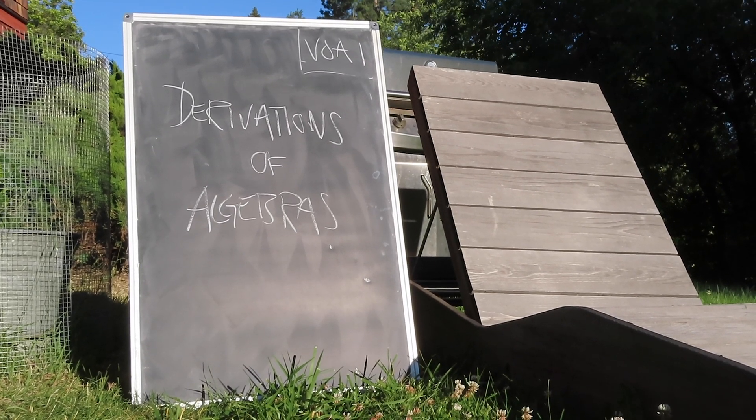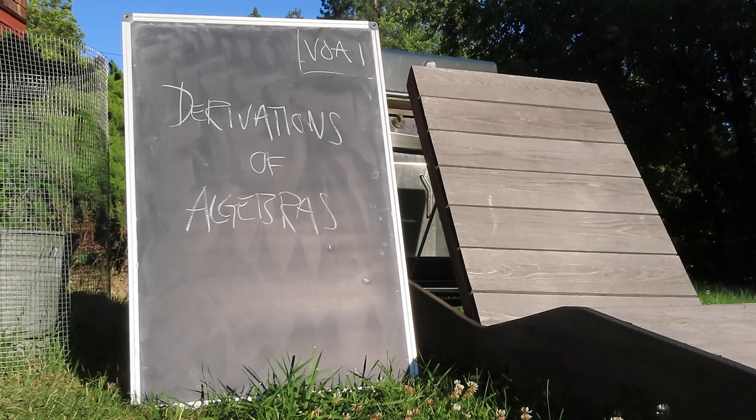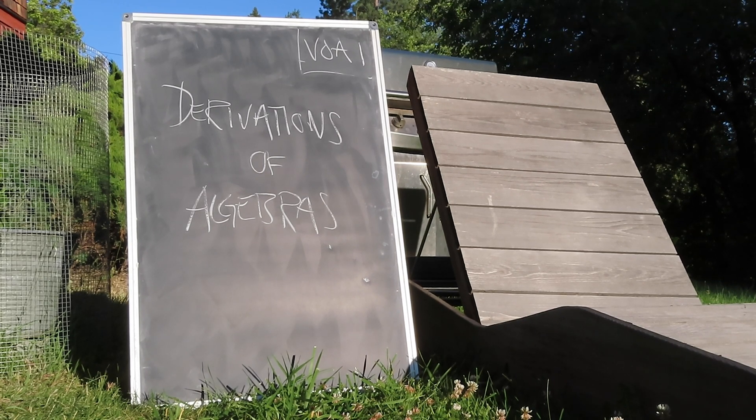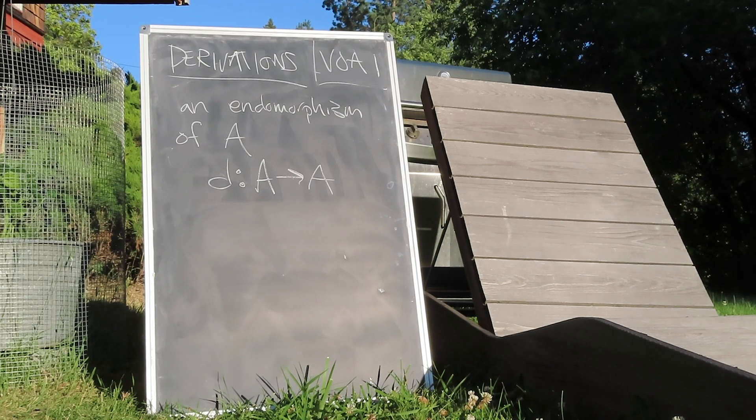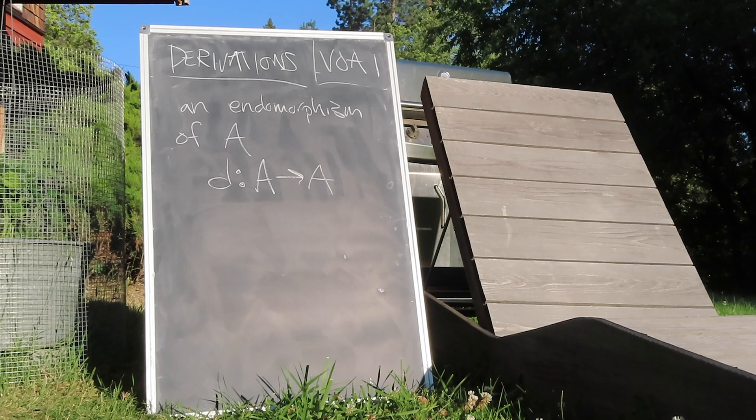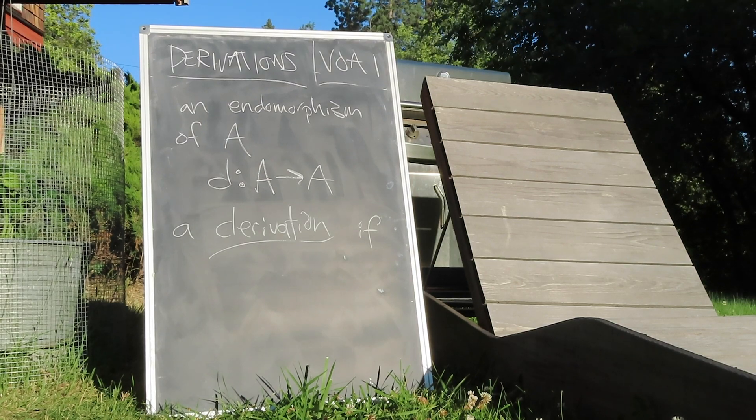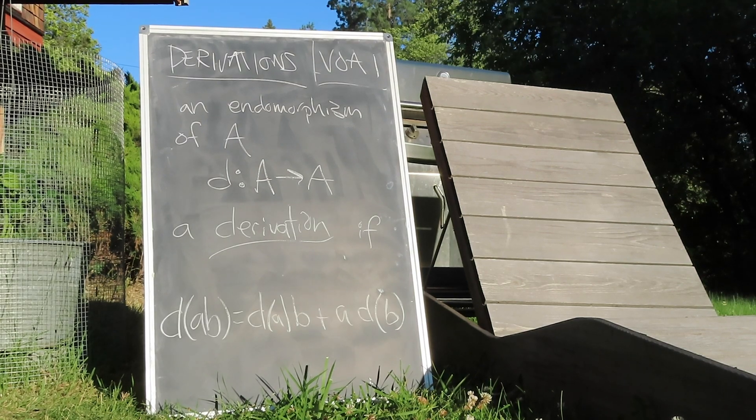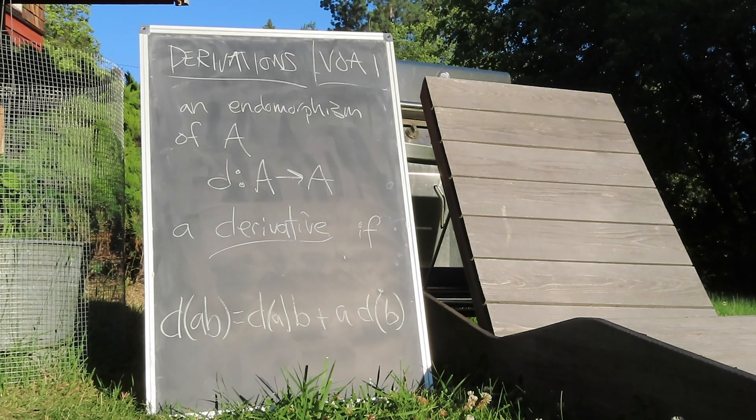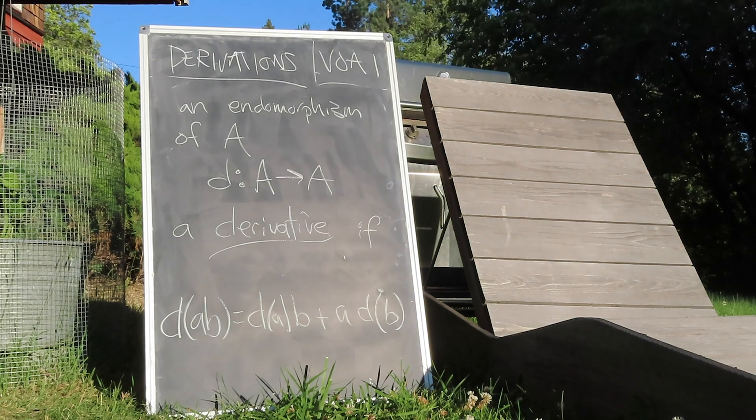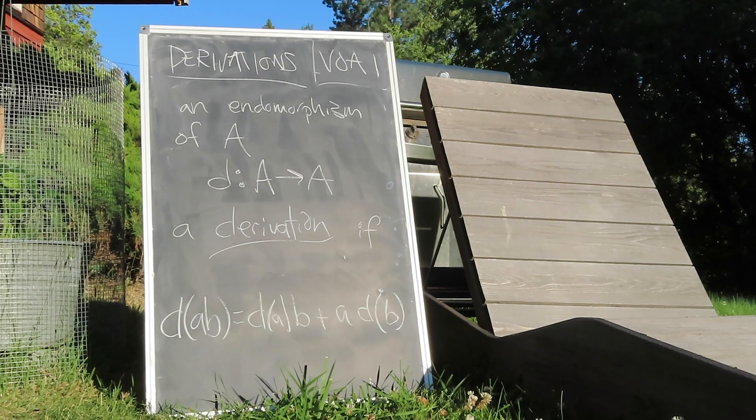And now to a distinguished class of linear endomorphisms on an algebra that is worthy of a little discussion. Let D be such a linear endomorphism on an algebra A. D is a derivation if its action on A satisfies the product rule familiar from elementary calculus. Indeed, any connotation of the word derivative by the choice of the operator name D is entirely intentional. The concepts are deeply related.